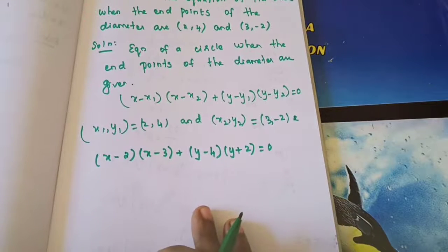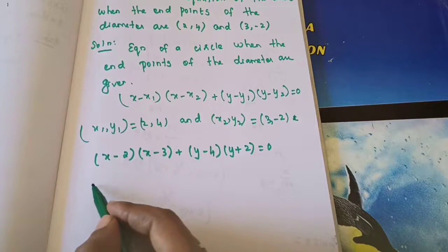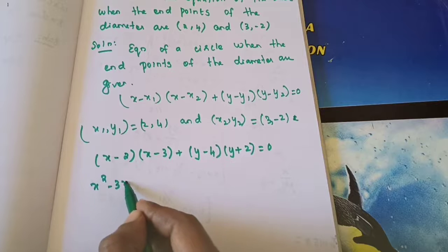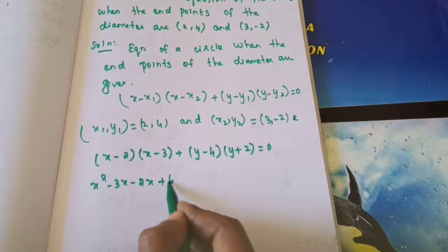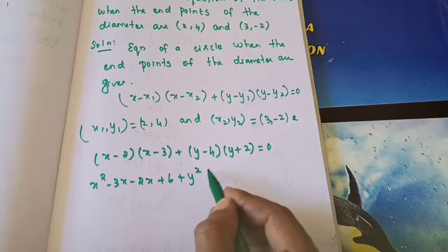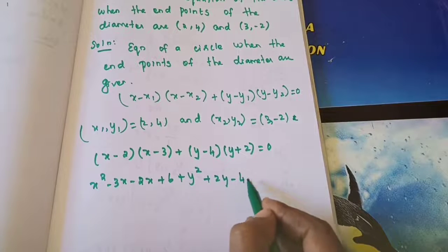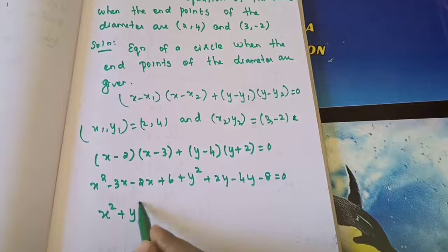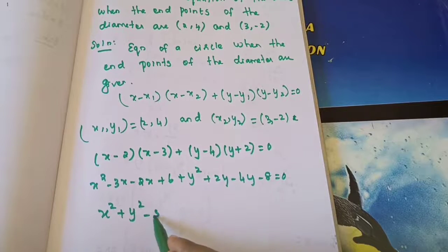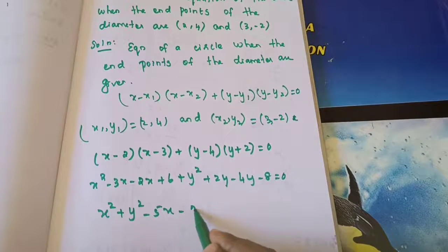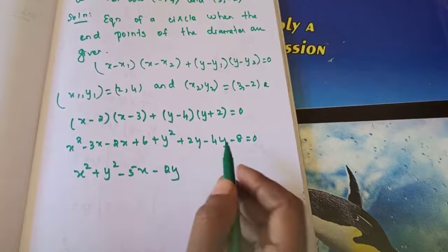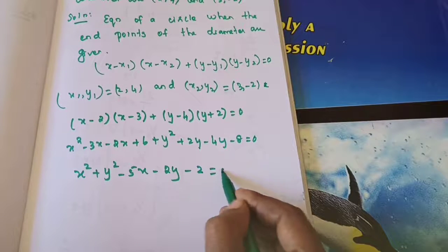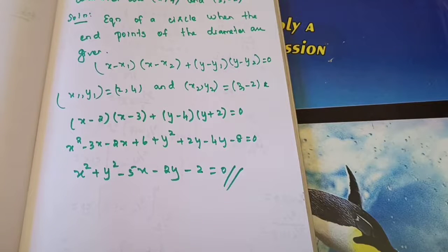Now multiply everything inside: x square minus 3x minus 2x plus 6 plus y square plus 2y minus 4y minus 8 equals 0. Simplifying: x square plus y square minus 5x minus 2y plus 6 minus 8 equals 0, which gives x square plus y square minus 5x minus 2y minus 2 equals 0. You need to learn the formula — that is very important.